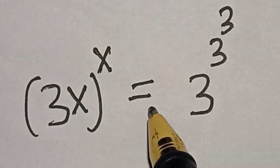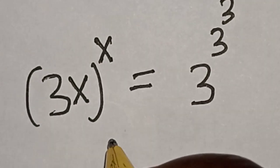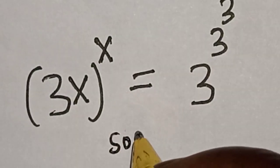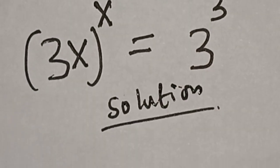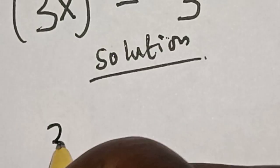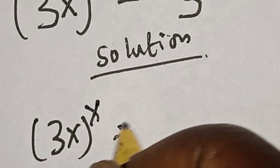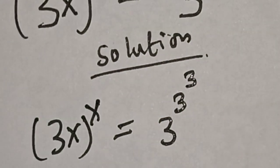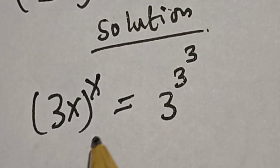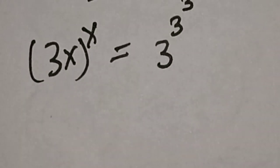Please don't forget to like, share, comment and subscribe. Thank you. Solution: we have the given question 3s raised to power s is equal to 3 raised to power 3 raised to power 3. Let's take the exponent of both sides and multiply it by 3.